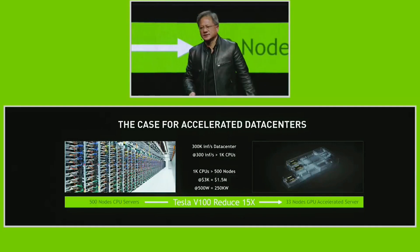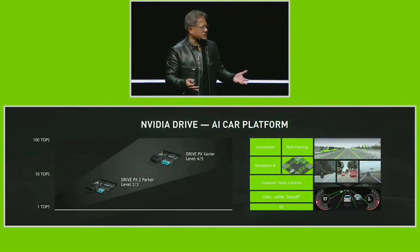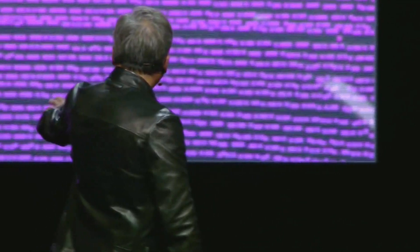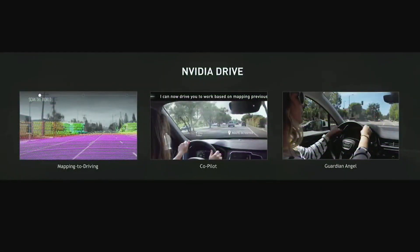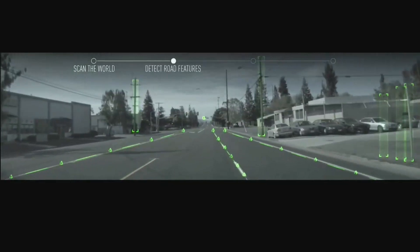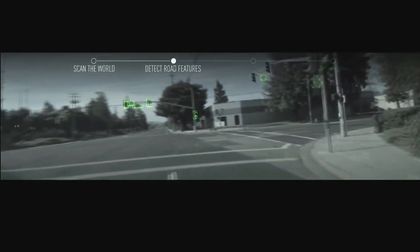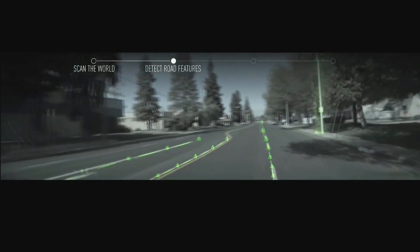We've created a platform called NVIDIA Drive — a roadmap and architecture spanning Level 2 to Level 5, from augmented driving all the way up to completely driverless systems. We dedicated ourselves to solving the self-driving car problem and created a full software stack. The first thing I'll show you is mapping for driving — how the car figures out where it is in the world, localizes within it, and detects everything around it. Using a LiDAR mapping car we detect lanes, vertical poles, and create an HD map of structures to use for localization, detecting all road features.